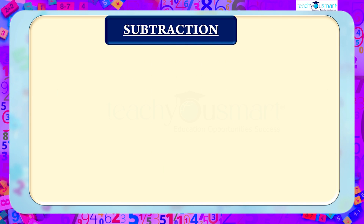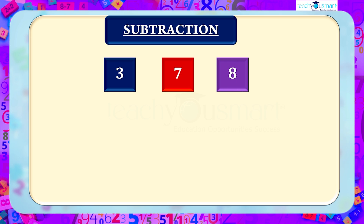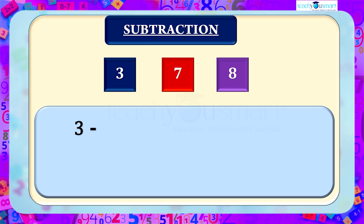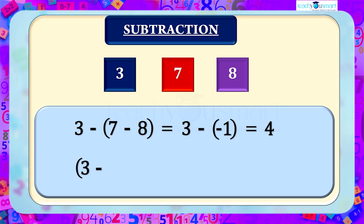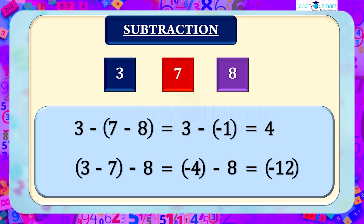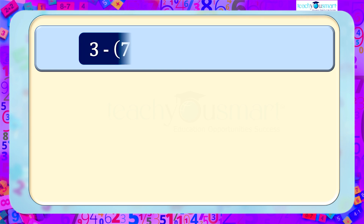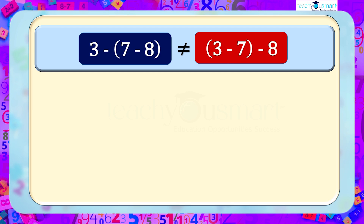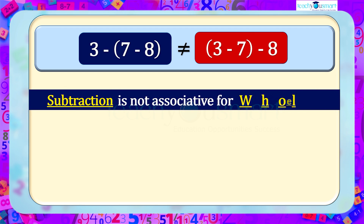Now let's look at subtraction of whole numbers, continuing with the same three numbers: 3, 7, and 8. Grouping in two different ways: first, 3 − (7 − 8) = 3 − (−1) = 4; and second, (3 − 7) − 8 = −4 − 8 = −12. That is, (3 − 7) − 8 is not equal to 3 − (7 − 8), hence subtraction is not associative for whole numbers.